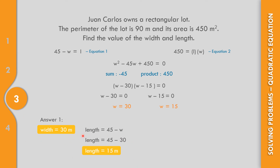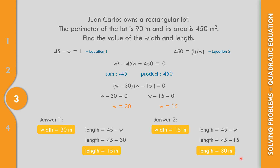If the width is 30 meters, the length is 15 meters. If the width is 15 meters, then the length equals 45 minus 15, which is 30 meters. Checking: 30 times 15 equals 450 — correct. And 15 times 30 also equals 450 — correct.